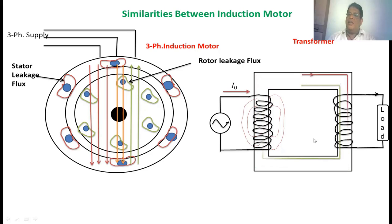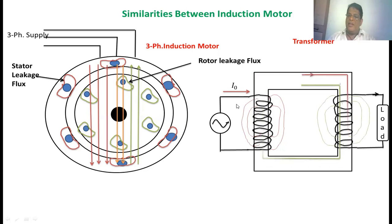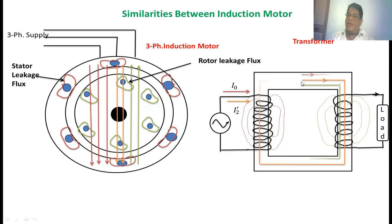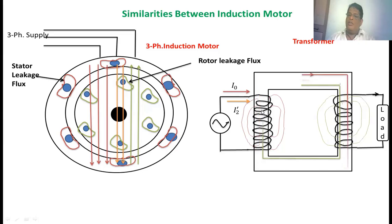The resultant flux in the transformer core decreases. To compensate, the primary takes additional current, represented as I2 dash. This extra current creates additional flux from the primary winding that opposes the secondary flux, so the net flux in the core remains constant. Even when a load is applied on the secondary winding, the flux in the core stays constant. The important parameter here is that V1 is the voltage applied to the primary winding, and the mutual flux links with both primary and secondary windings, inducing a voltage in each.